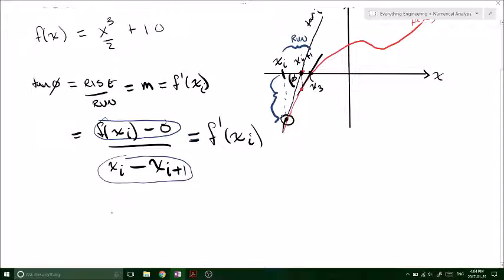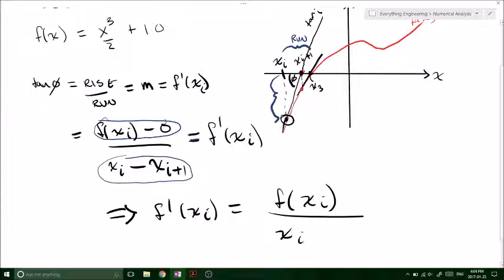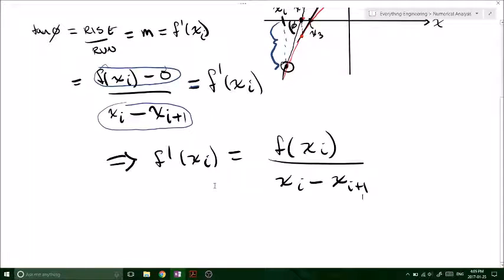All right, so let's clean this up. So f prime xi equals f of xi all over xi minus xi plus 1. So this is going to be the general equation for our slopes and our iterative process that we're going to develop, the Newton-Raphson method. So now if we just further simplify.